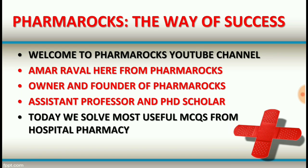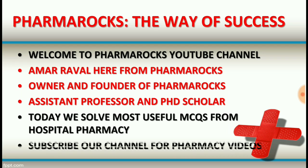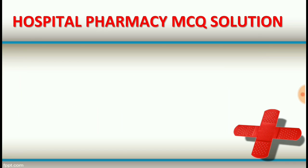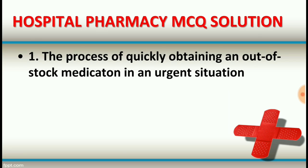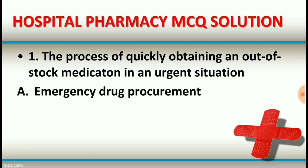Today, we solve the most useful MCQs from hospital pharmacy. Subscribe our channel for such more pharmacy educational videos. Hospital pharmacy MCQ, question number one: The process of quickly obtaining an out-of-stock medication in an urgent situation is — option A: emergency drug procurement.